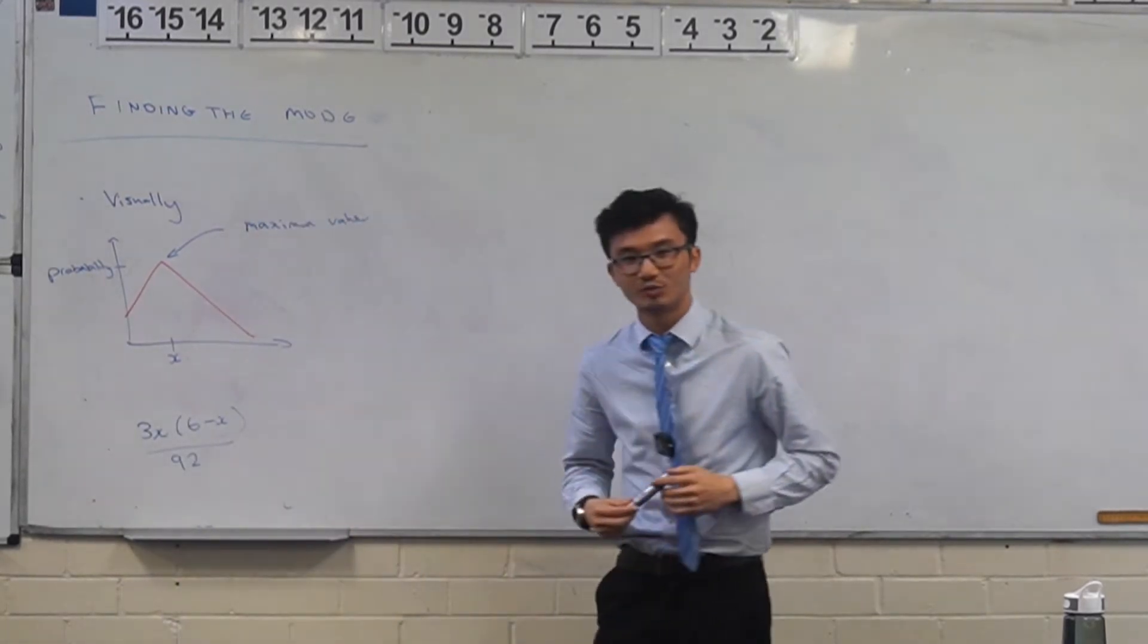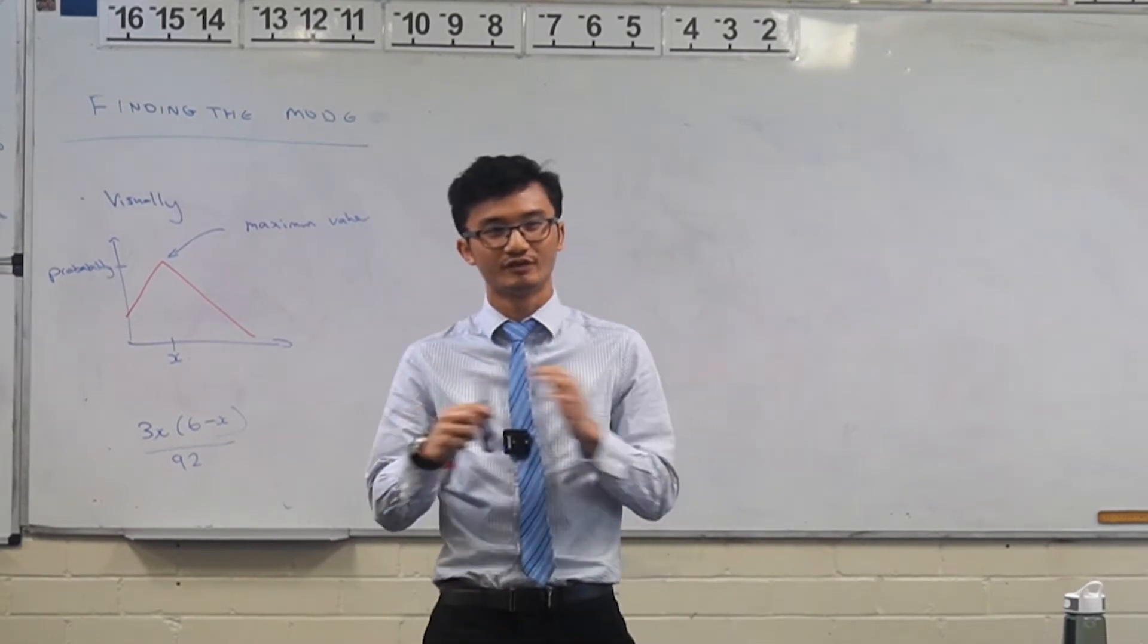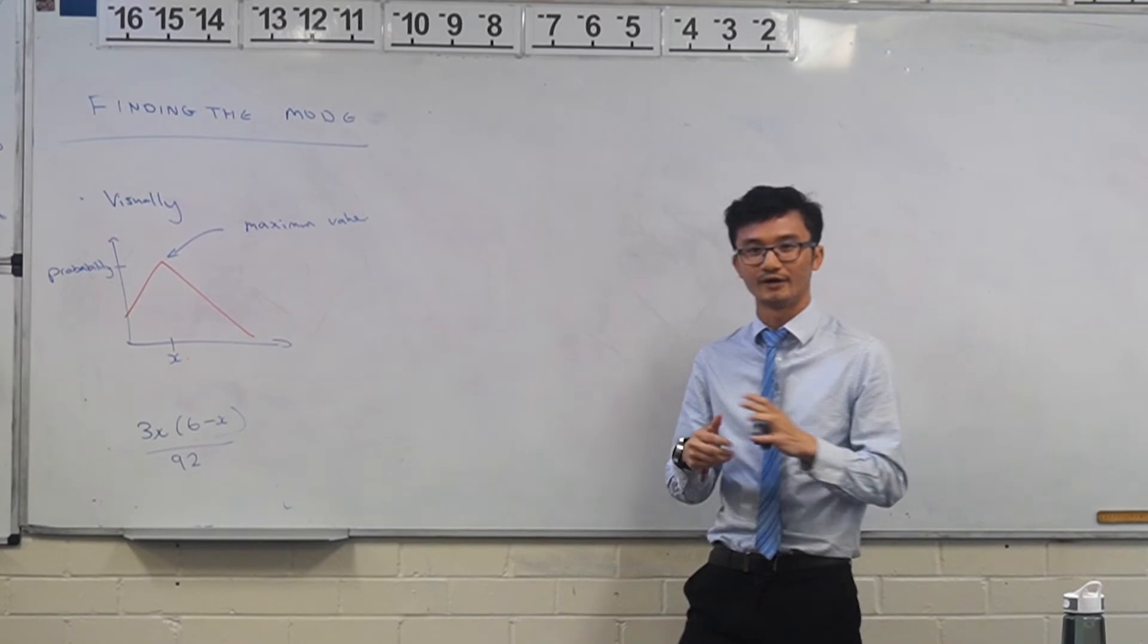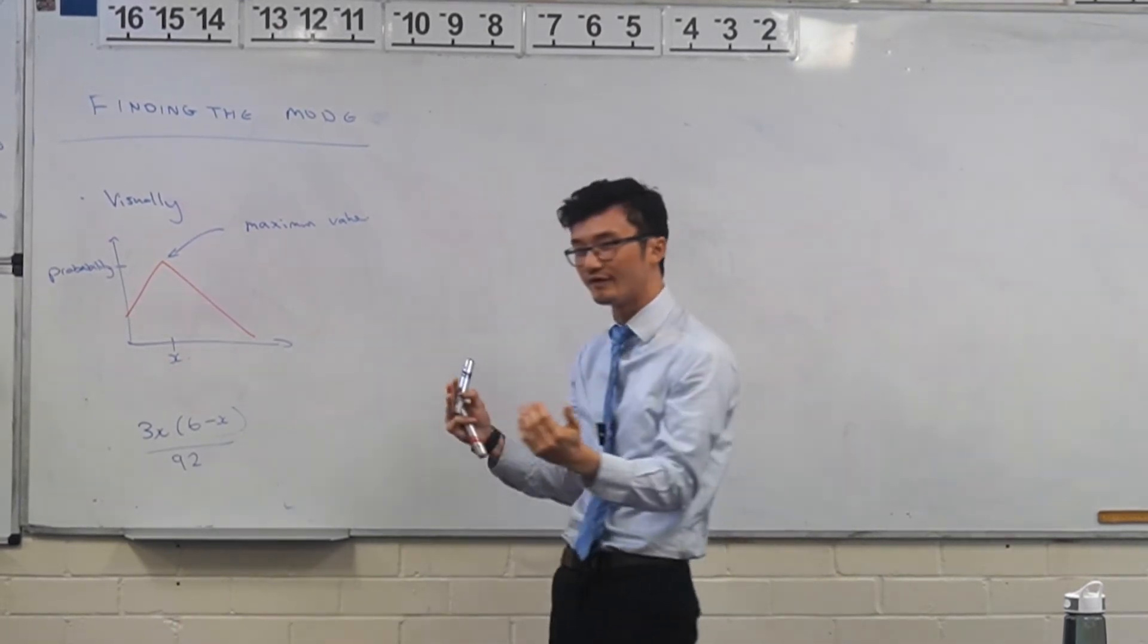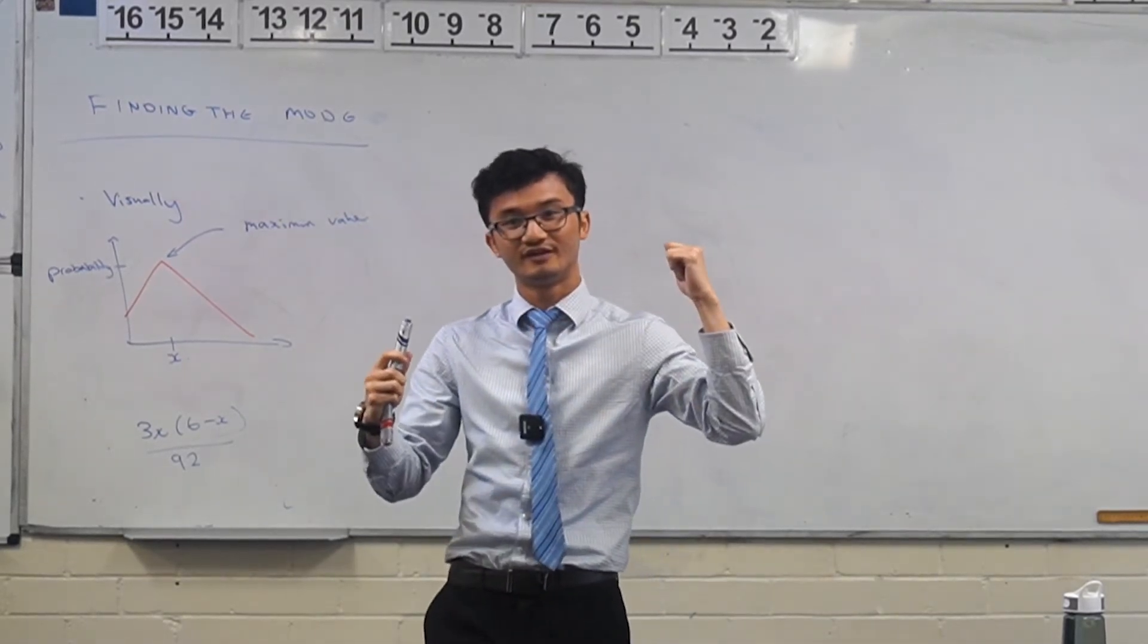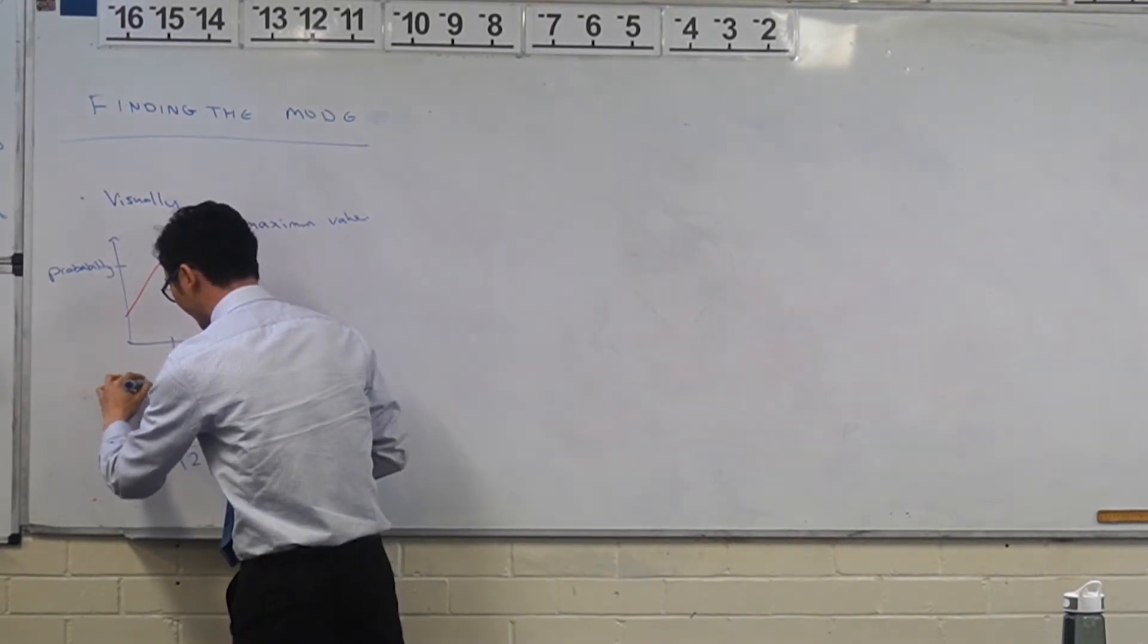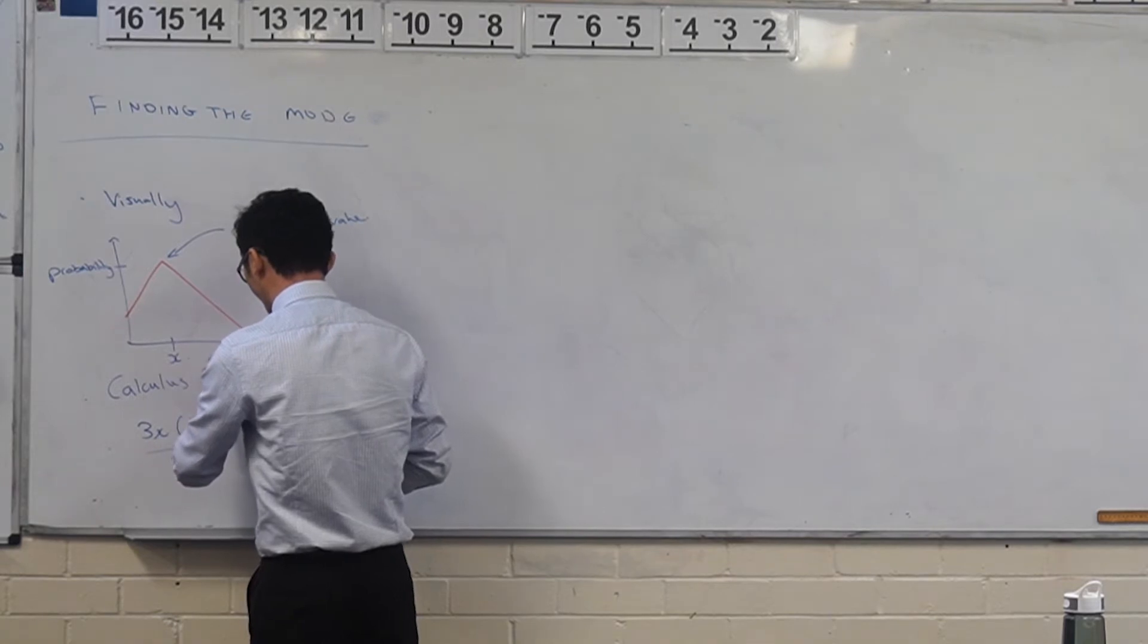If I'm given an expression, how can we find the mode for that? Because I don't have the graph for this expression. What method might we require in that sense? I'm trying to find the highest point of a graph. Evan said f dash of x, or calculus, right. And why might we want to find f dash of x?